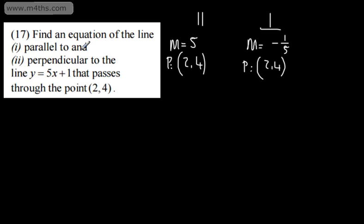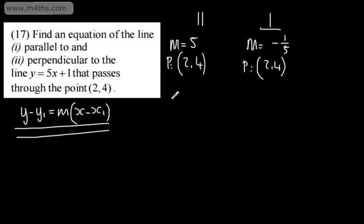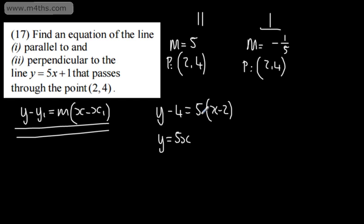We're asked for an equation, so we can write it as we wish. Using y minus y1 = m(x minus x1): for the parallel line, y minus 4 = 5(x minus 2). Tidying that up: y = 5x minus 10 + 4, which gives y = 5x minus 6. Nice and straightforward.